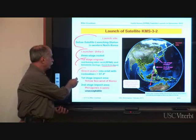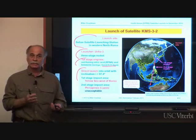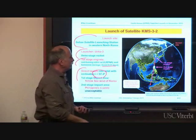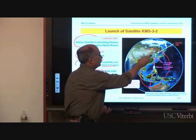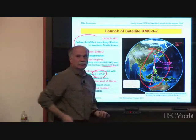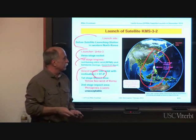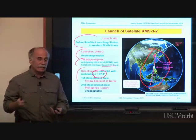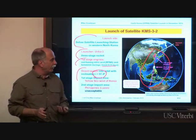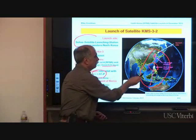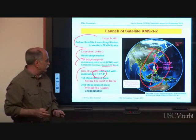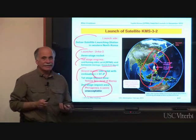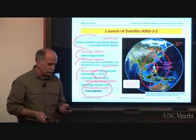Let's see what would happen if they tried to launch directly into their desired orbit — a sun-synchronous repeating orbit with inclination 97.4 degrees. Looking at the direct transition trajectory from North Korea on the globe, the first stage would burn out and splash down in the Yellow Sea close to the launch site, but the second stage drop zone would be roughly over the Philippines, near Luzon island. This is unacceptable for safety and national sovereignty reasons. So North Koreans could not launch a satellite directly into the desired orbit.